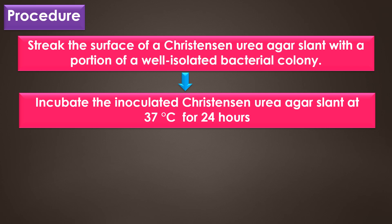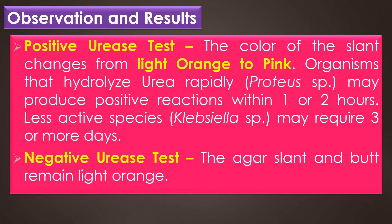After incubation, examine for the development of a pink color. In case of an unknown result, incubate the tubes for 7 days to check for slow urease production. Observational result: in a positive urease test, the color of the slant changes from light orange to pink. Organisms that hydrolyze urea rapidly, for example Proteus species, may produce a positive reaction within 1 to 2 hours.